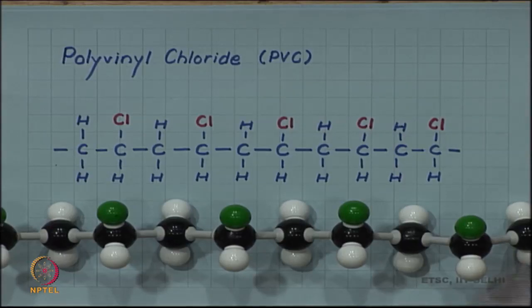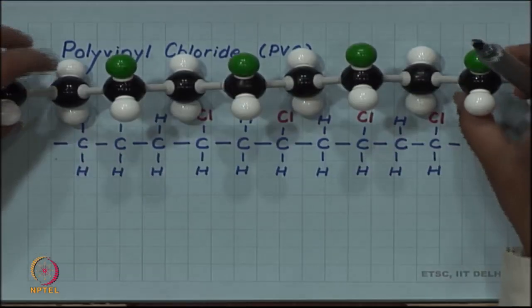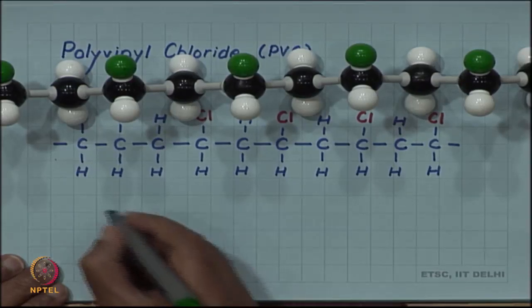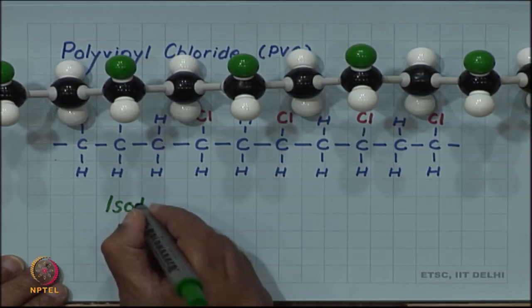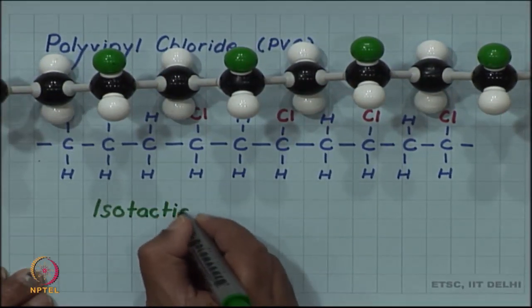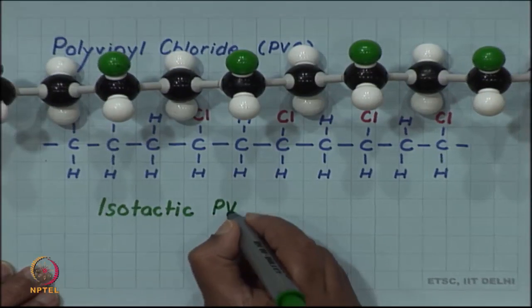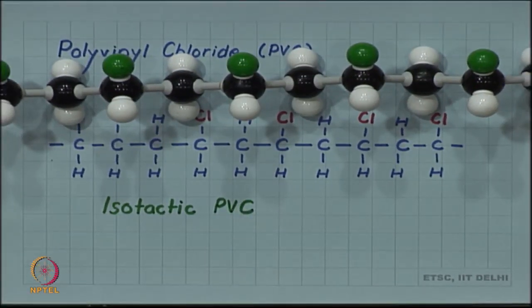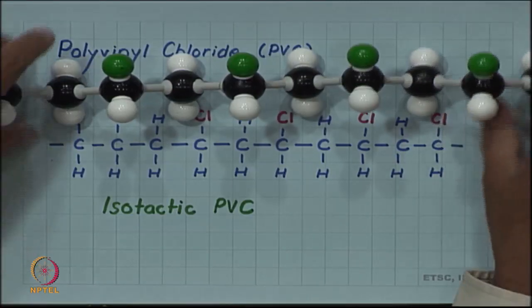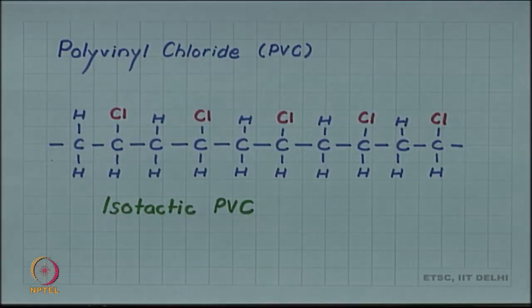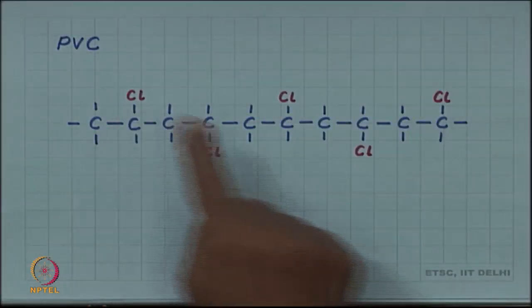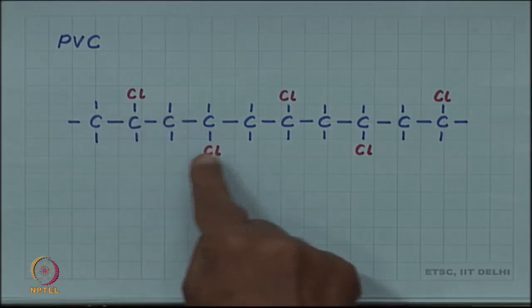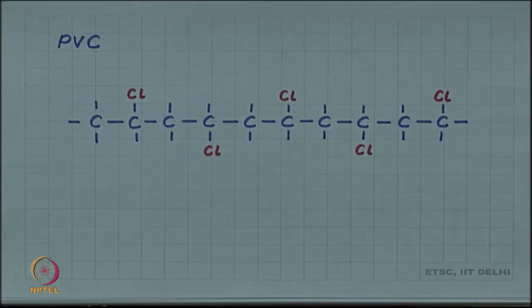This kind of structure is called isotactic PVC. It is possible to have chlorine atoms not all on the same side, but on alternating sides.